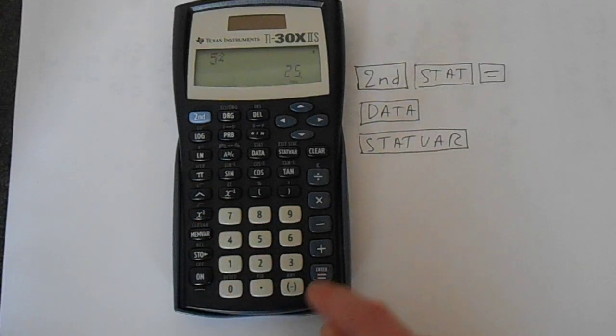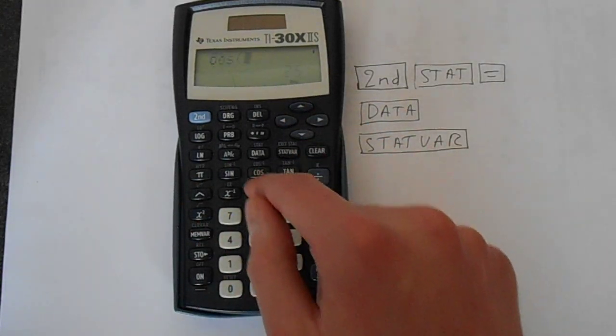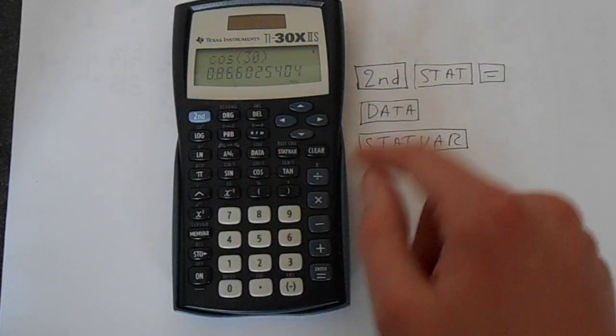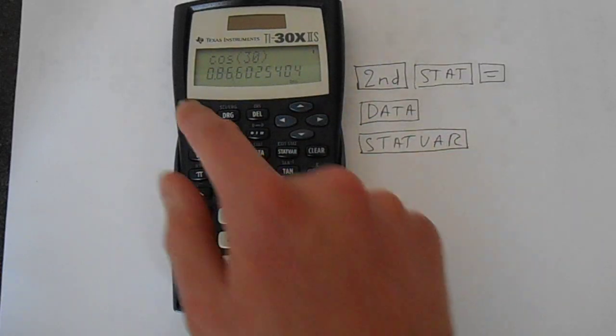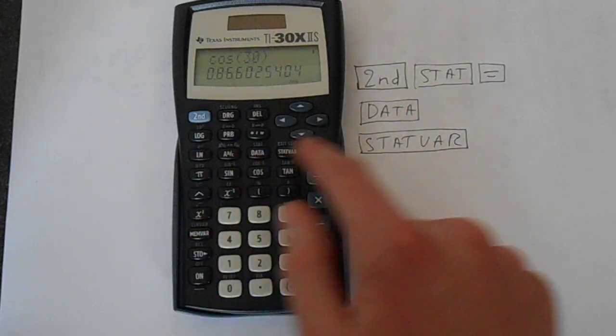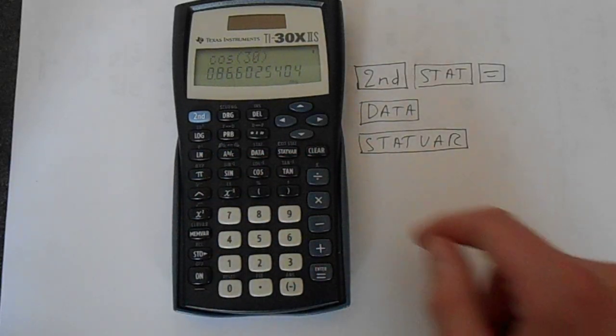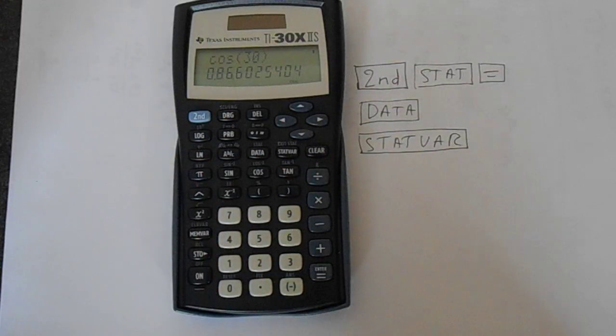You've got squared here. Obviously your sine and cosine, and your inverse, accessed with the second function. All these things that are written in kind of purple are accessed with the second function button.